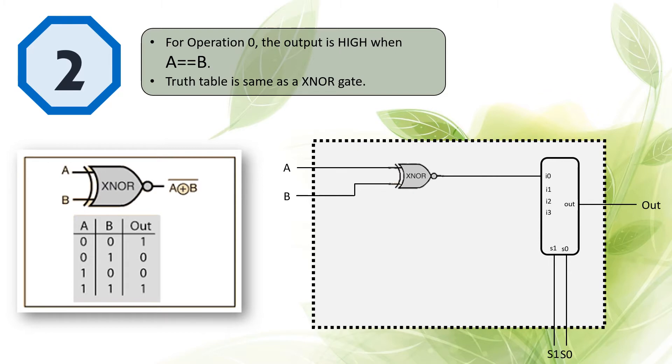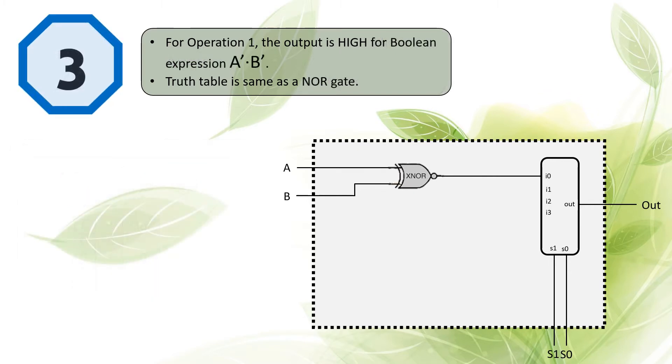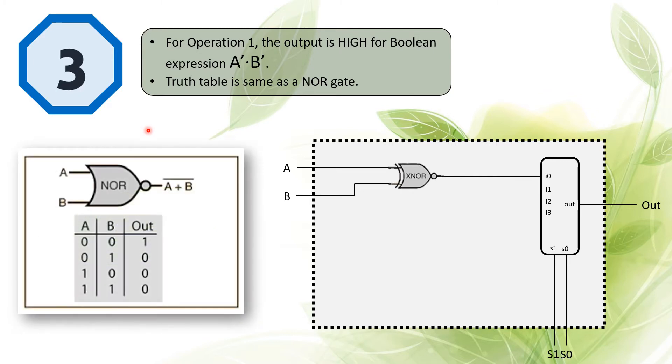Next, for operation one, the output will be high for the Boolean expression of A bar and B bar, which is shown from the table. We found that the truth table is same as a NOR gate, which only takes A equal to zero and B equal to zero.